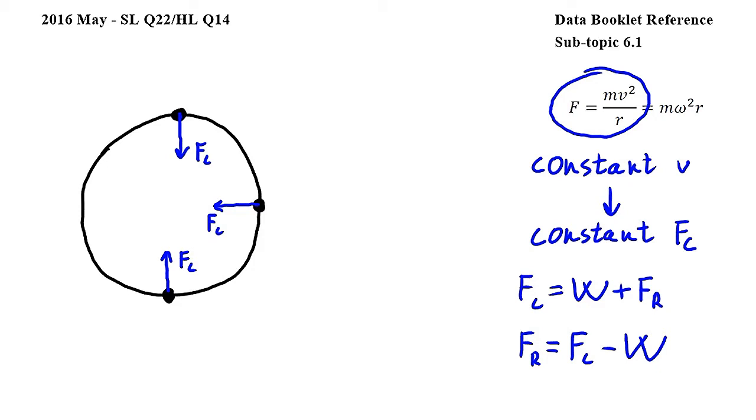And since the direction of Fc changes, while the direction of W is constant, we can also eliminate answer C, and conclude that the correct answer is D.